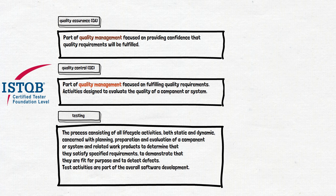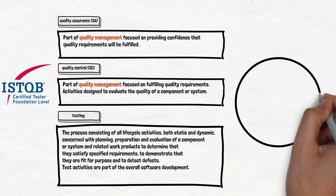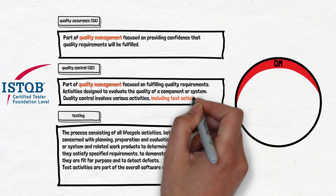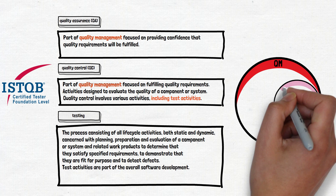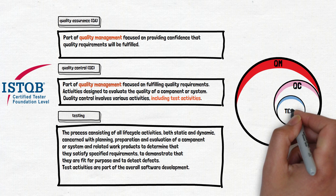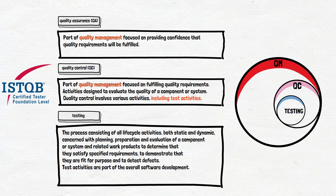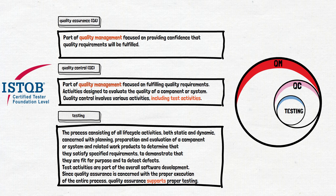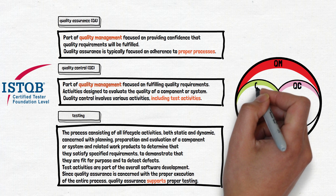We will now give our understanding of these theoretical concepts. First of all, both QA and QC are parts of the larger concept of quality management, so we draw a big QM circle. We don't have any information about the relations between QA and QC processes. What we know is that quality control involves various activities, including test activities, so we draw two circles — one for quality control and one for testing — with the testing circle inside the QC circle. Since quality assurance is concerned with the proper execution of the entire process, quality assurance supports proper testing. QA is typically focused on adherence to proper processes in order to provide confidence that the appropriate levels of quality will be achieved.